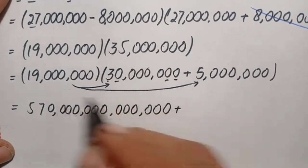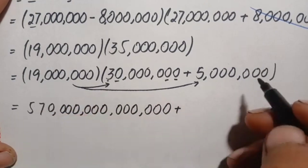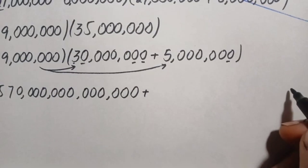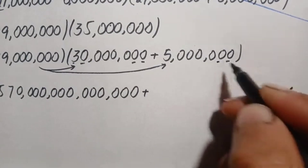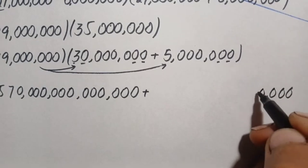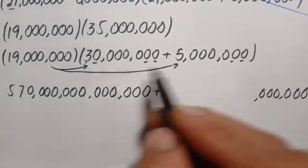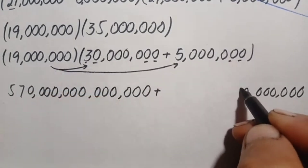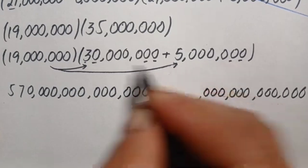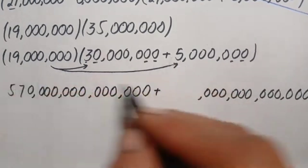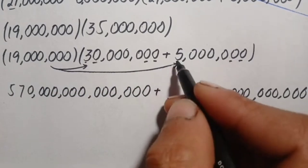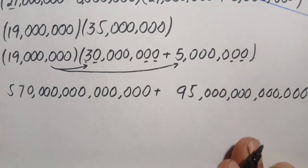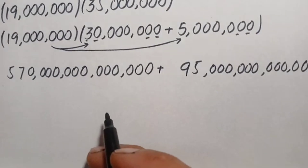Now multiply 19 million by 5 million. Starting from the ones position, the zeros give six zeros, and multiplying 5 by the six zeros adds six zeros. Then 5 × 19: 5 × 9 = 45, write 5, carry 4; 5 × 1 = 5, plus 4 = 9. This gives 95 trillion.